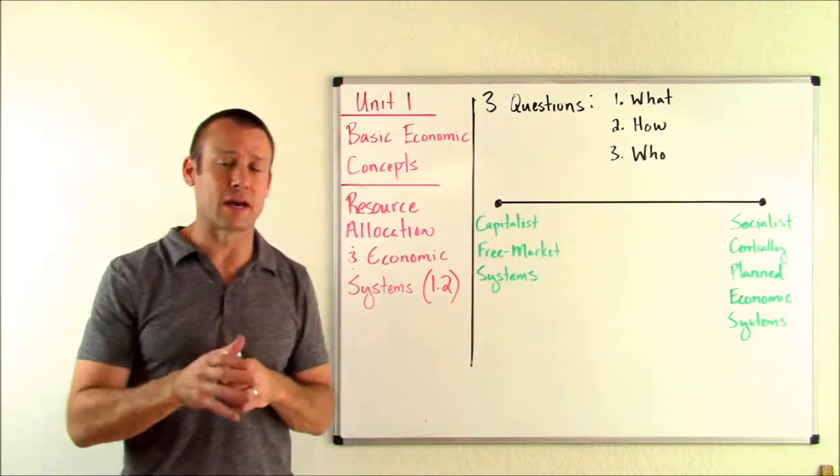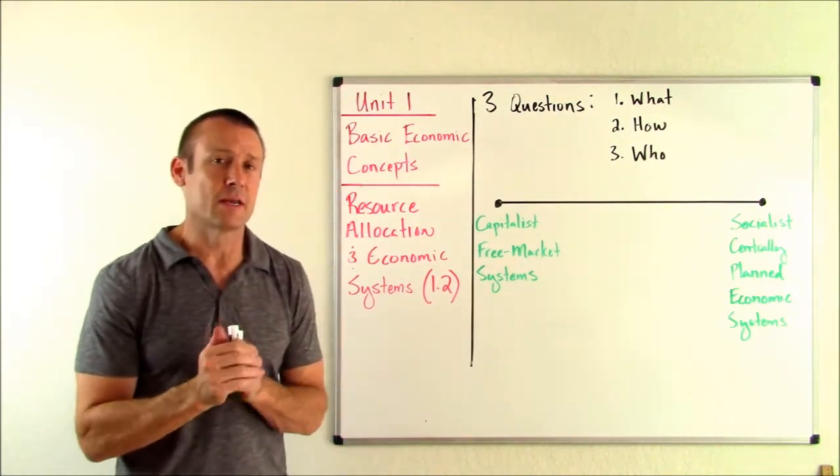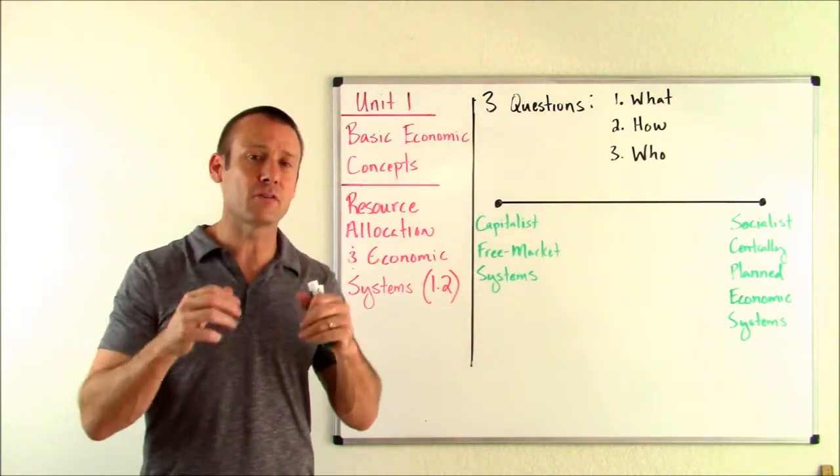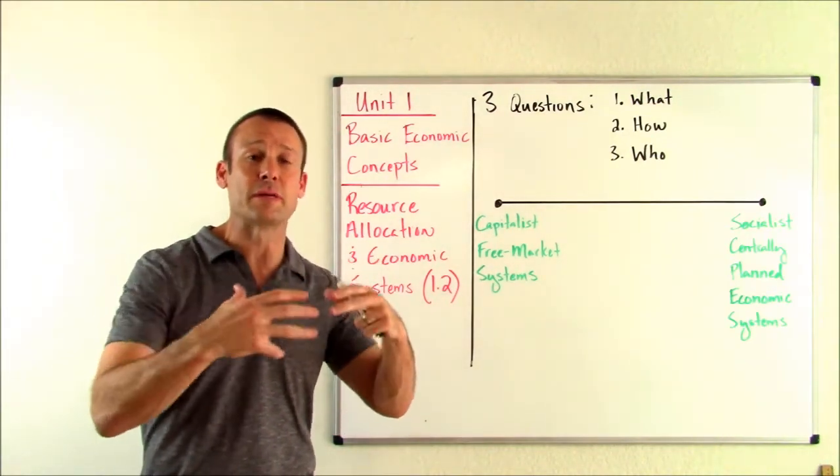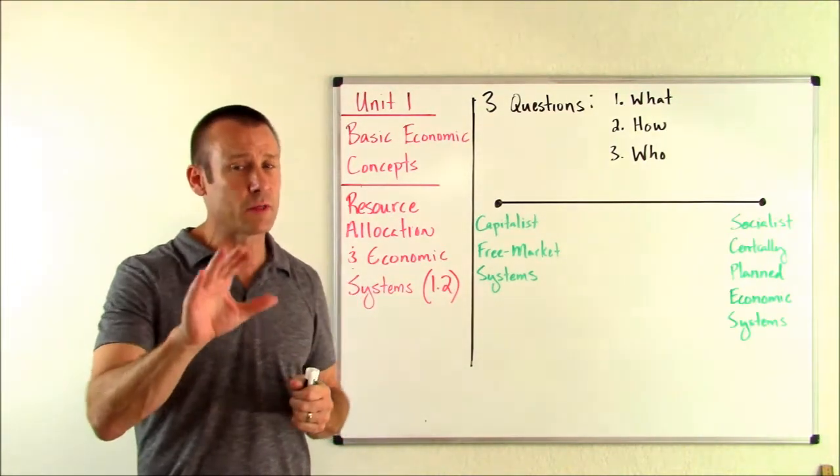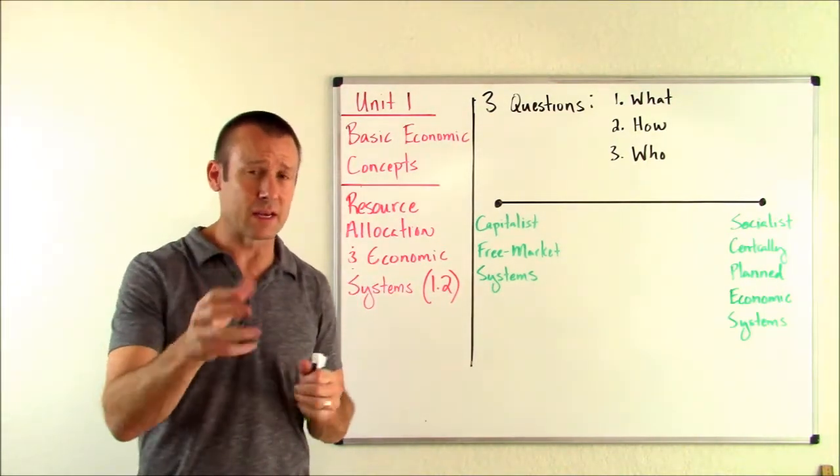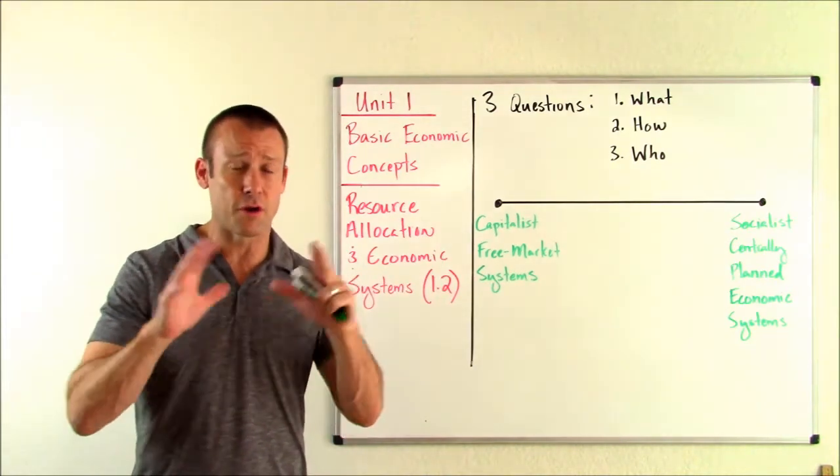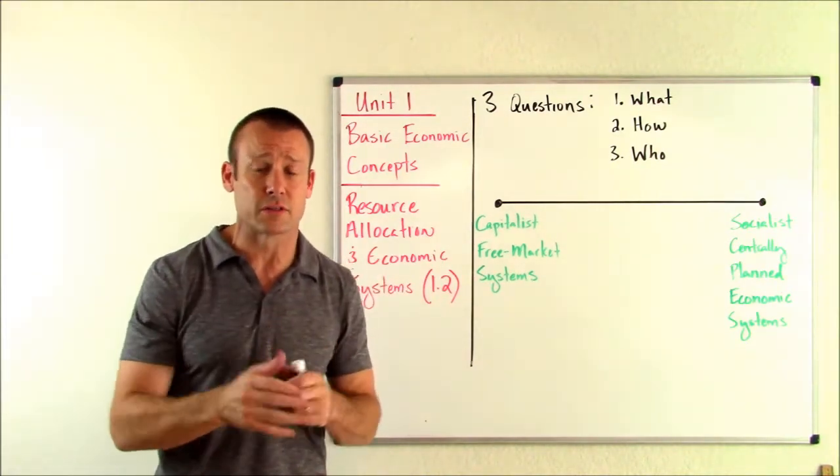But as we get into this, guys, I want to just take an aside for a second. Economists generally think about things of value as being goods and services. That's right. Goods and services are things of value. Now, I know that sounds materialistic, and I want to say, guys, us economists, we do know there are things that are more important than goods and services.